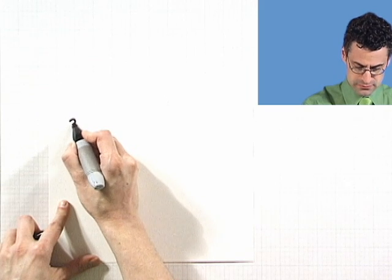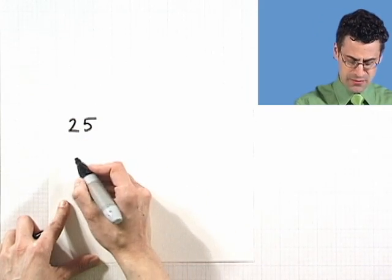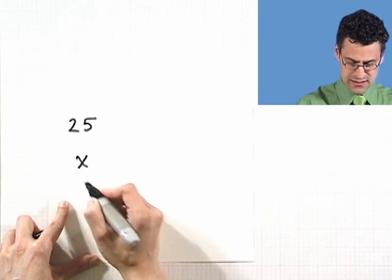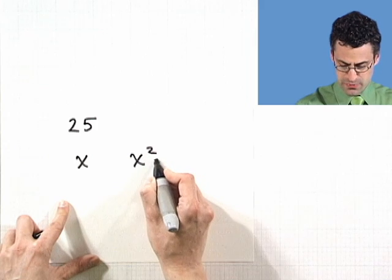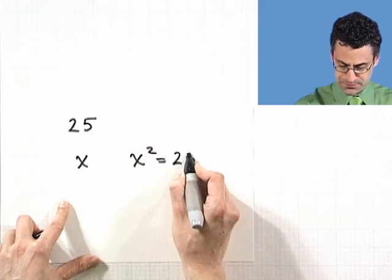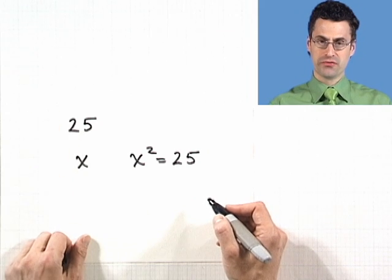Suppose I want to find all the square roots of 25. Now what does that mean? Well, if I want to find the square roots of 25, what I want to do is I want to find numbers, I'll call them x, which have the property that x squared will equal 25. That's what it means for x to be a square root of 25.